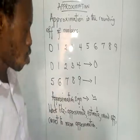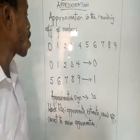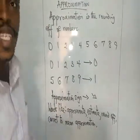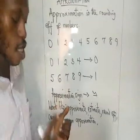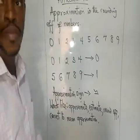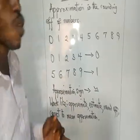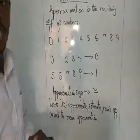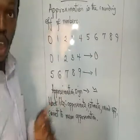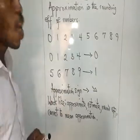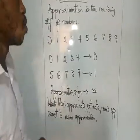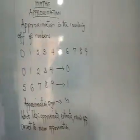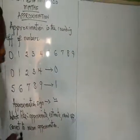Today we'll be talking about rounding off, or approximation, to the nearest thousand. And we'll probably also be talking about rounding off, or approximation, to the nearest hundred. First, let's look at approximation to the nearest thousand.